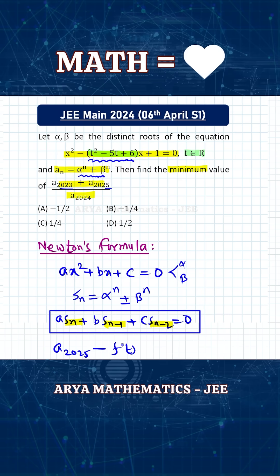So using Newton's formula, we can write that 1 into a_2025 minus, and this expression we are calling as f of t. So minus f of t, and this multiplied by a_2024, and finally 1 into a_2023,